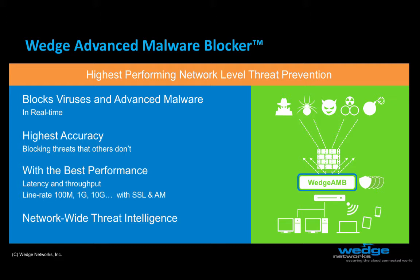To start, Wedge AMB is believed to provide the highest-performing network-level threat prevention available. Wedge AMB is 100% virtualized and available as a virtual machine or a more conventional physical appliance. The virtual or physical appliance is typically placed behind the next-gen firewall, or UTM, at the enterprise location or data center. Anti-malware and, if desired, SSL inspection are then turned off on those appliances and activated on Wedge AMB.